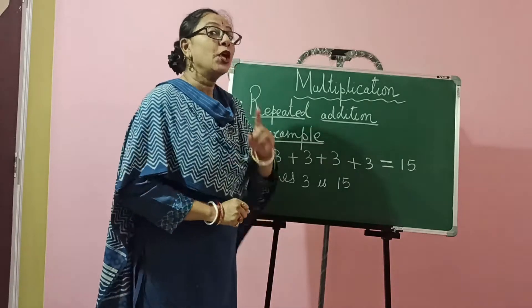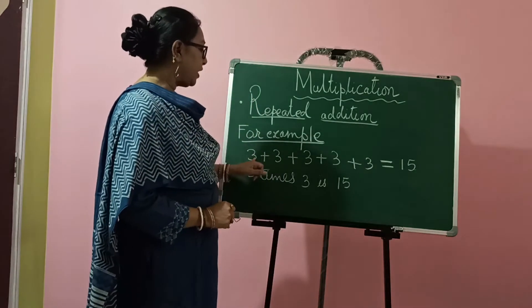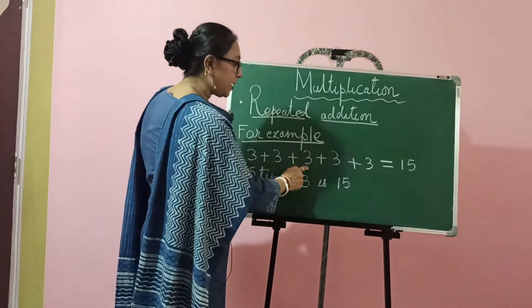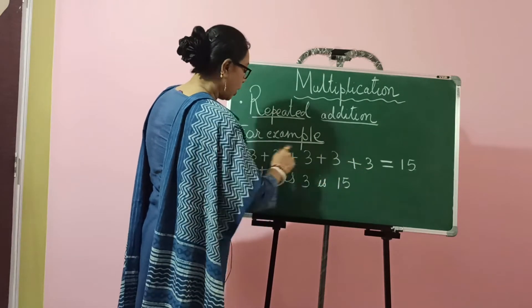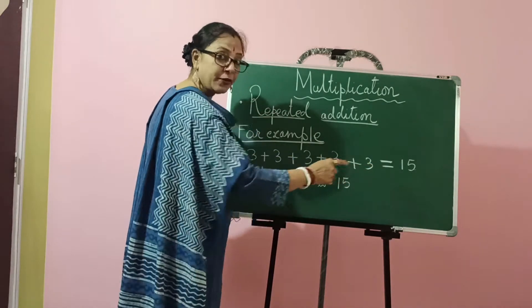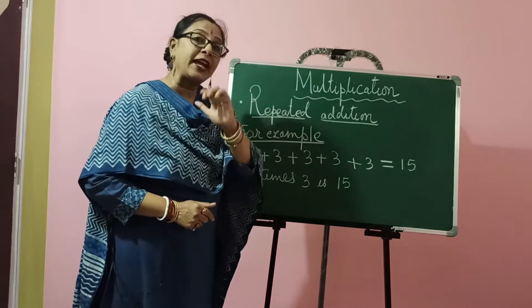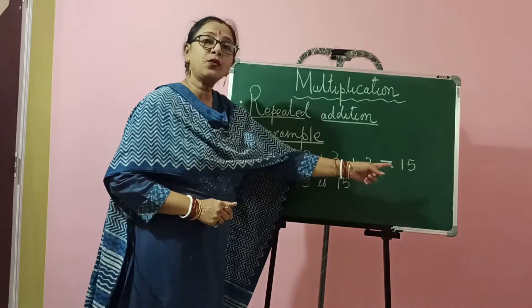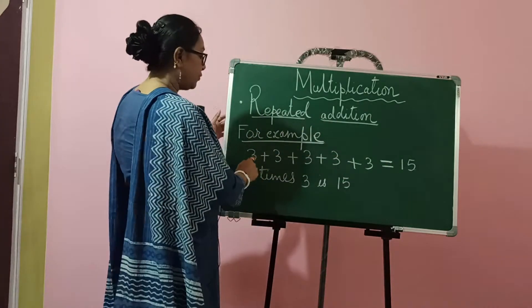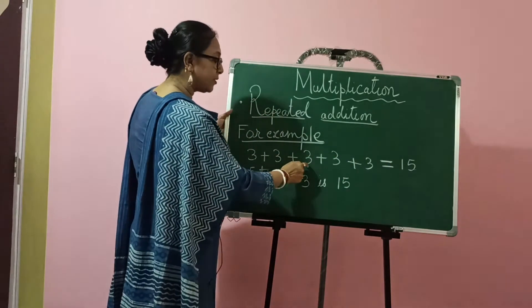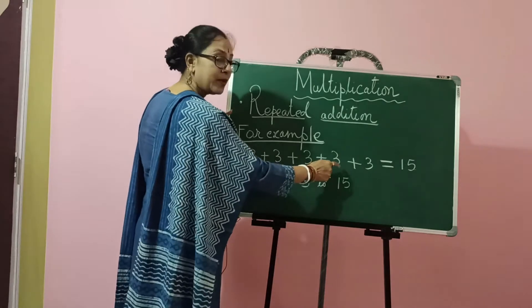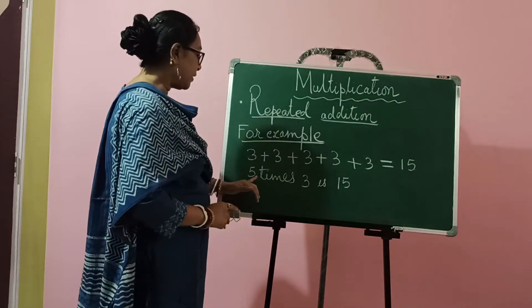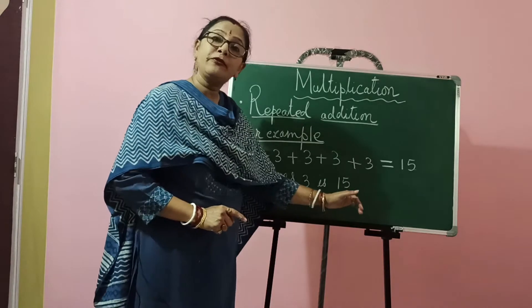Suppose you have to add 3 five times: 3 plus 3 plus 3 plus 3 plus 3. You have to add 3 five times, that is 5 times 3, which gives you 15. 3 plus 3 is 6, 6 plus 3 is 9, 9 plus 3 is 12, and 12 plus 3 is 15. So we say 5 times 3 is 15.